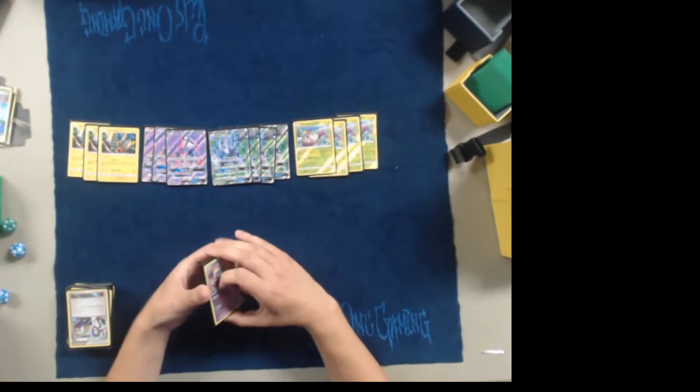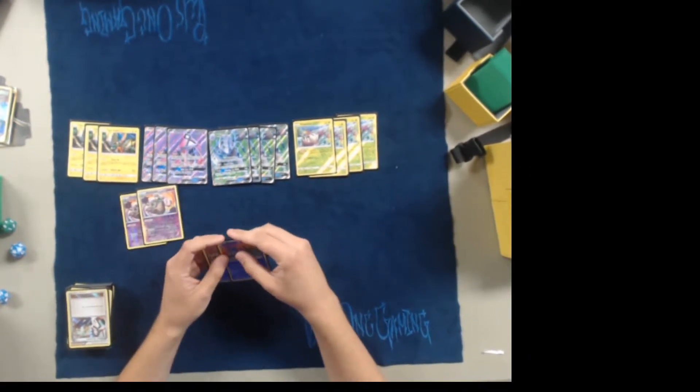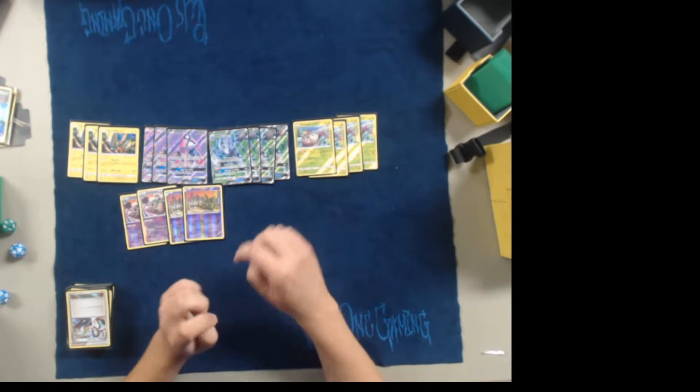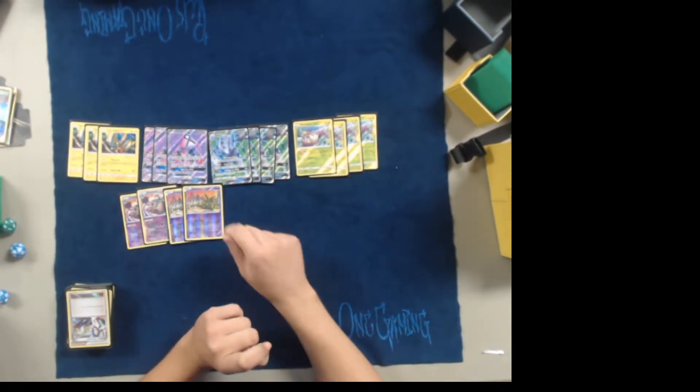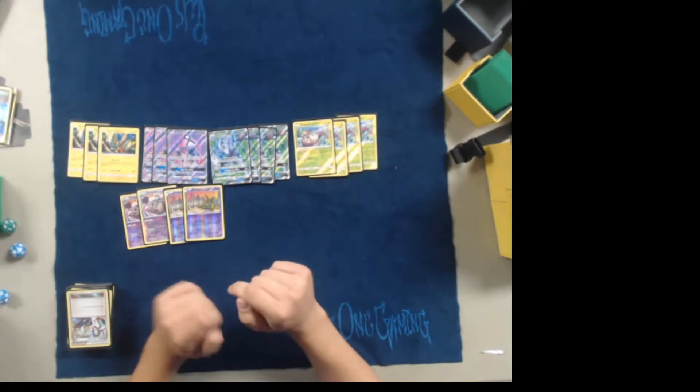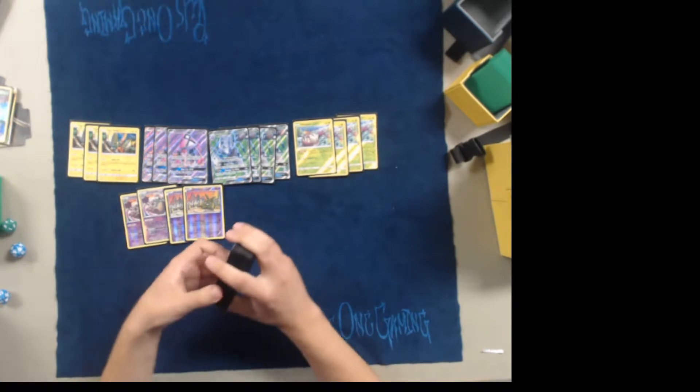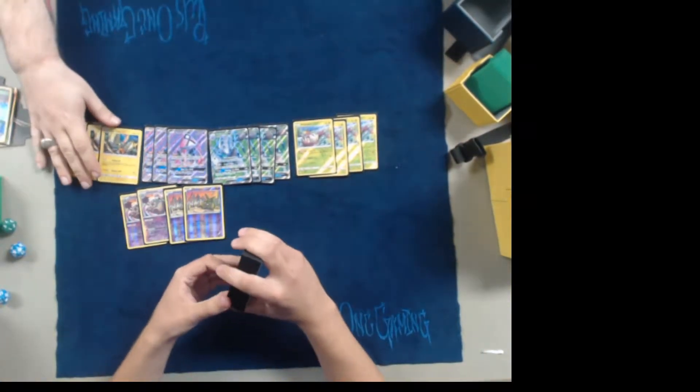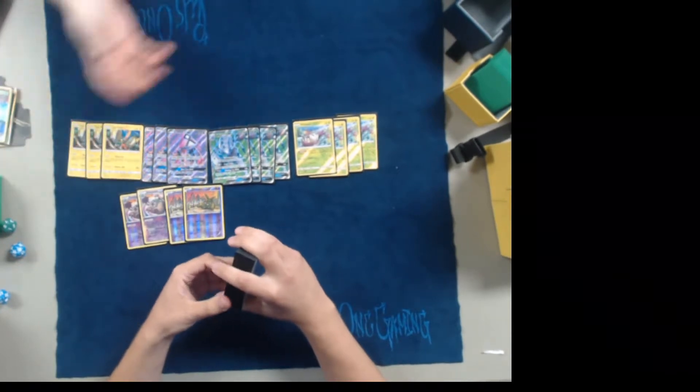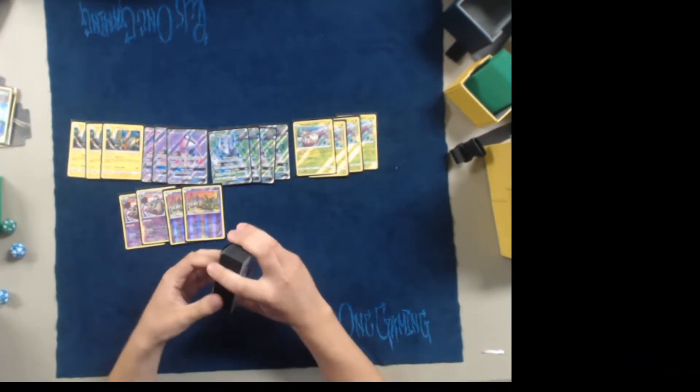To round it off, I play two of the Garbotoxin and then two of the Acid Spray Trubbish—that's the one that can discard an energy. You don't ever attack with him. I'm not playing Rainbow Energies, that's why there's no Trashalanche here. I didn't think Trashalanche was really worth the spot in the deck. He doesn't do enough in my opinion, so I just went with two of the Garbotoxin to kind of help lock out my opponent while I'm just picking away with two shots.